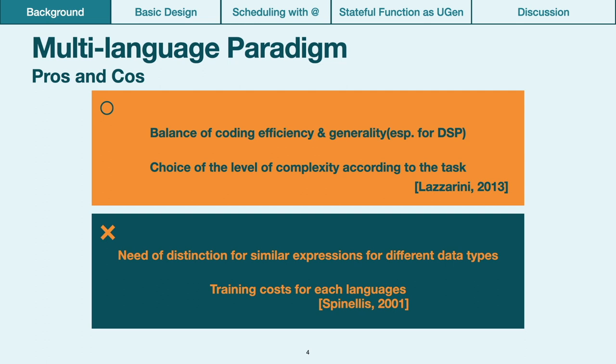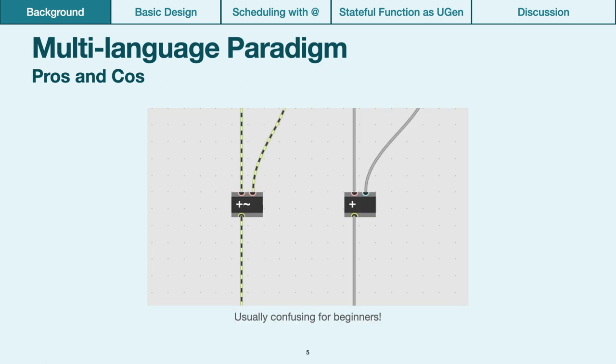However, multi-language approach actually contains some problems. Firstly, users have to learn each language specification for each domain. And also, sometimes, the user must use slightly different operators for similar expressions, which may reduce the efficiency of the coding process, especially for beginners.